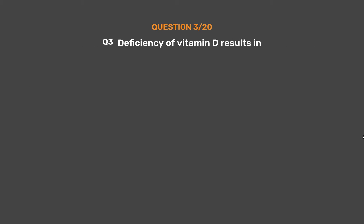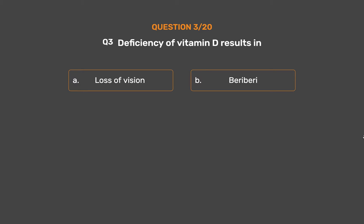Question number 3. Deficiency of vitamin D results in: Option A - Loss of vision, Option B - Beriberi, Option C - Scurvy, Option D - Rickets.